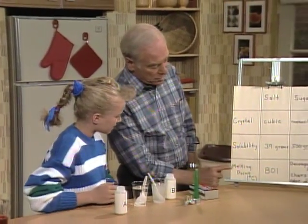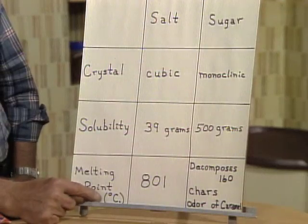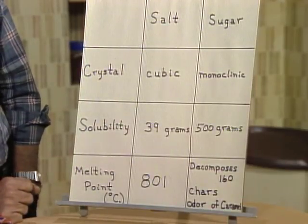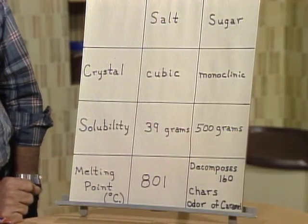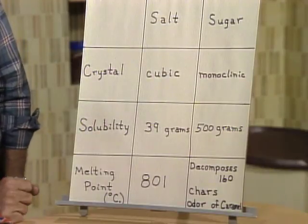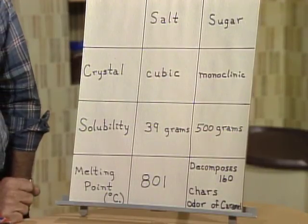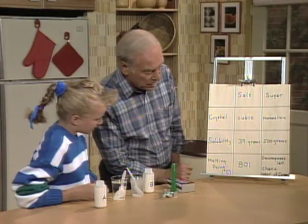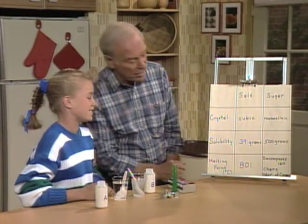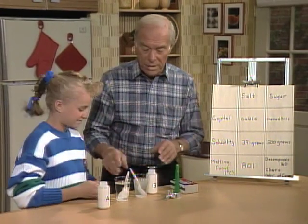Here's one final test that we will make, while scientists would run all kinds of other tests. Notice the last one on the chart — the melting point, in Celsius degrees. Salt doesn't melt until 801 degrees. Is that ever hot. And sugar — it starts to decompose at 160 degrees, a lot less. It chars, and that's the odor of caramel.